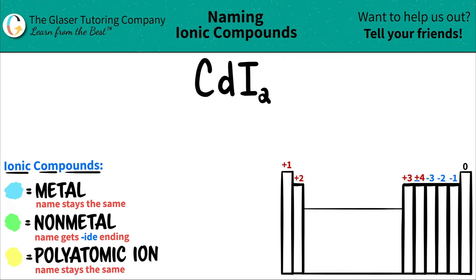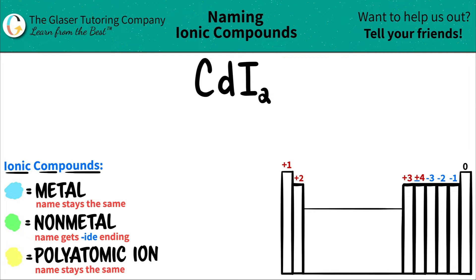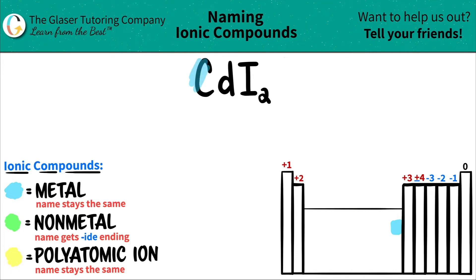Today we are going to be naming the ionic compound CdI₂. In order to do this, let's map out where cadmium is, which is Cd, and where iodine is. So cadmium, Cd, is over here on the periodic table — right down here. Since it's in a transition metal block, we know that Cd is a metal. It's a transition metal.